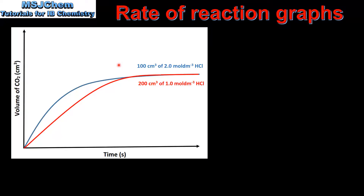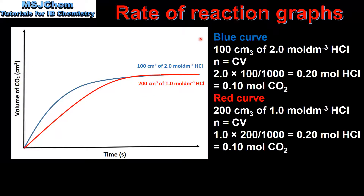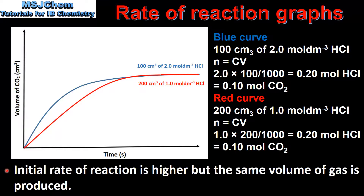In the next example we have 100 cm³ of 2 mol per dm³ HCl reacted against 200 cm³ of 1 mol per dm³ HCl. Both the blue and red curves produce the same amount in moles of carbon dioxide, so the volume of gas produced is the same for both. However, the gradient for the blue curve is steeper, indicating a faster initial rate of reaction due to the higher concentration of acid. To summarize: the initial rate of reaction is higher for the blue curve, but the same volume of gas is produced for both curves.